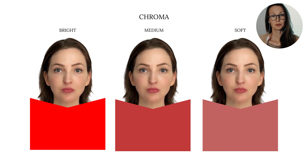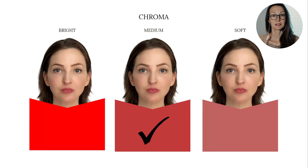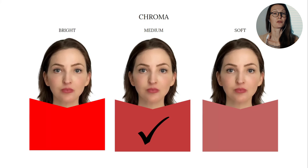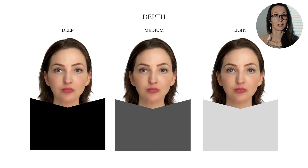Medium chroma is much better for her — there's not much distance between the color and her. It does not draw attention to the color, but it enhances her features. Soft chroma colors will not have enough energy for her color type.